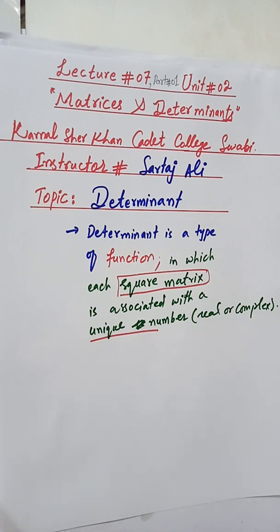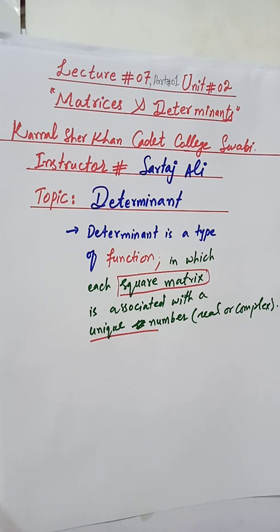An important point to remember is that determinant is only defined for square matrices. You can only take the determinant of a square matrix. If a matrix is not a square matrix, you cannot find its determinant.